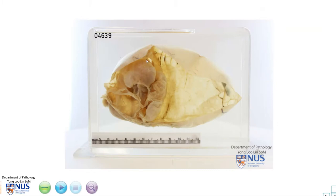So in summary, this is a multilocular cystic tumor of the ovary, and in the cyst locules in the fresh specimen, there would have been thick mucus or mucoid material. There are no solid areas or fleshy areas to suggest malignancy, and this is a mucinous cystadenoma. I also recommend that you refer to the video of mucinous cystadenocarcinoma or mucinous carcinoma.